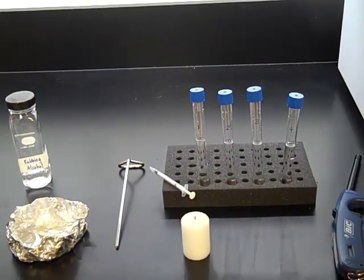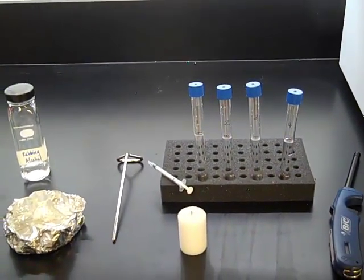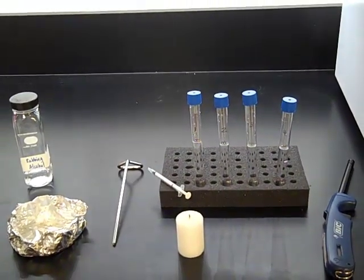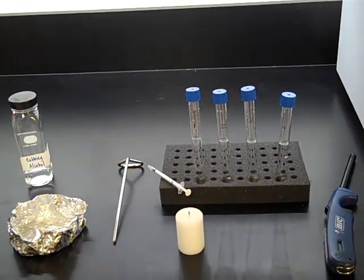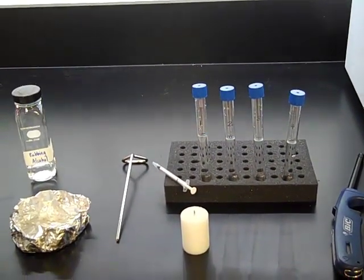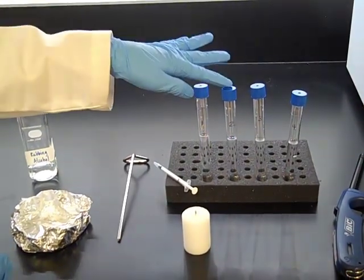Next, you're going to need to add the correct volume from the dilution table in the micro manual to the correct plate. For example, we're going to use plate one, and it will have one mil added from dilution tube two.